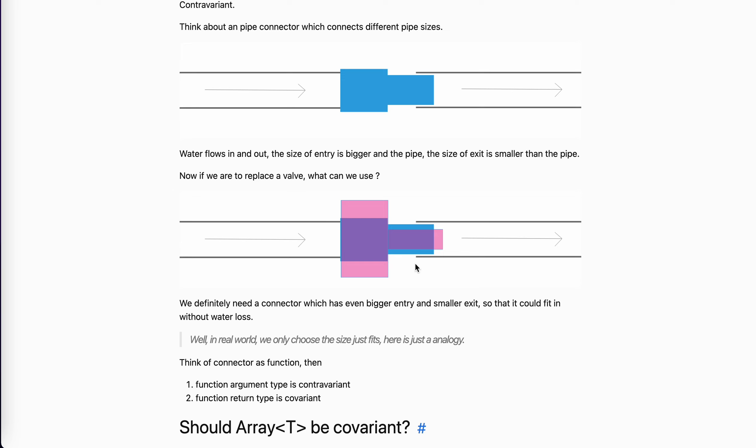If we think of this connector as a function, which the in will be the argument, the exit will be the return, you will see that why the return type is covariant, but the argument is contravariant. So yeah, I think this is a very good analogy, at least for myself. This is how I understand the contravariance. So hope it helps.